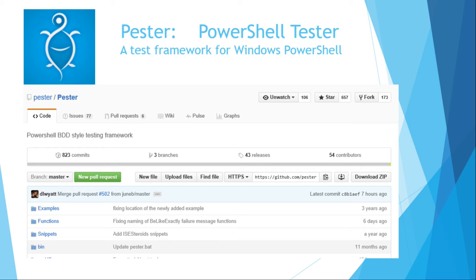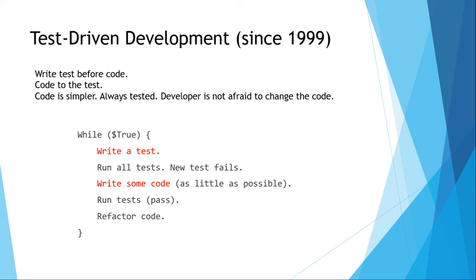Pester is a BDD-style testing framework. Test-driven development is decades old. People like Kent Beck decided that the way to approach testing is to write the test before writing the code — this was pretty revolutionary. You write a test, you write only the code that you need to pass the test, and then you go on to the next test. The first time you run the test it should fail because there's no code. But you write only the code needed to pass each test. In theory the code is simpler, everything is tested a priori, and the developer can be bolder because regression errors are caught automatically.